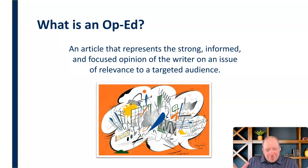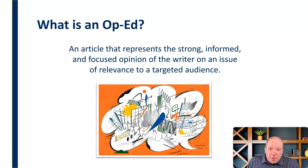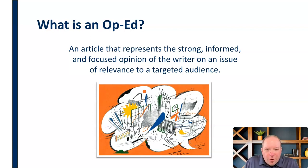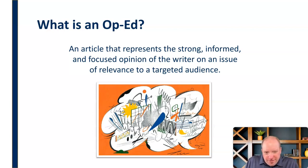Op-eds can have strong opinions, but they do need to be informed. You can't just spew content — it's not going to get published and it's not going to be meaningful. So they should be informed and focused opinions. This is not just a rant area; it needs to be focused on a particular topic or singular idea. It also needs to be important to whatever the targeted audience of that publication is, otherwise they're not going to be interested in publishing or reading it.